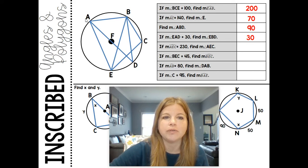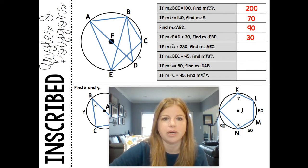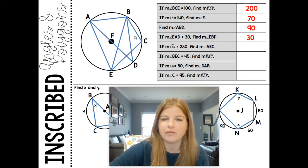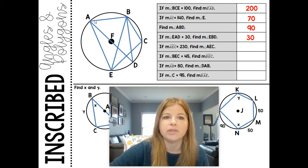If the measure of arc AEC, this major arc, is 230, find the measure of angle AEC. This angle AEC opens up to arc AC. If AEC is 230, then AC would be 360 minus 230, which is 130. And the inscribed angle AEC would be half of that arc. So if arc AC is 130, half of it would be 65.